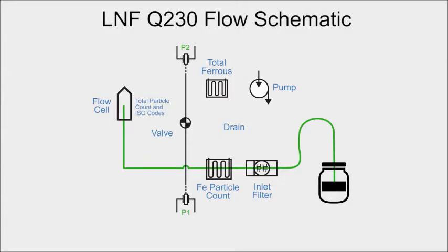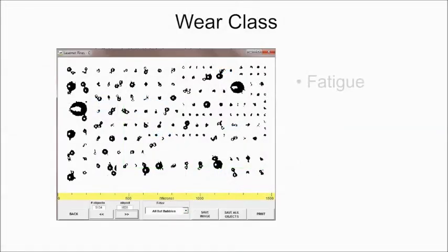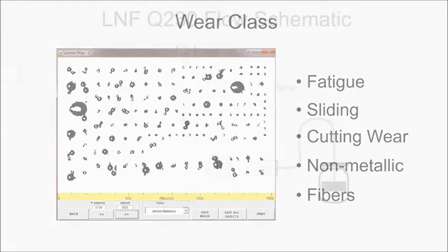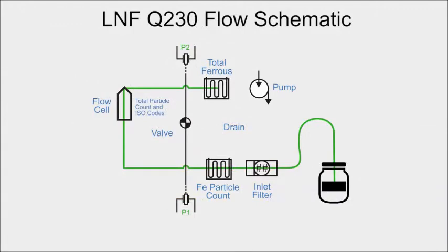This provides particle count and ISO codes, and also characterizes all particles greater than 25 microns into a wear class: either fatigue, sliding, or cutting wear, non-metallic, or fibers, based on the shape of the particles. Finally, the sample enters the second magnetometer, which measures total ferris content in ppm.